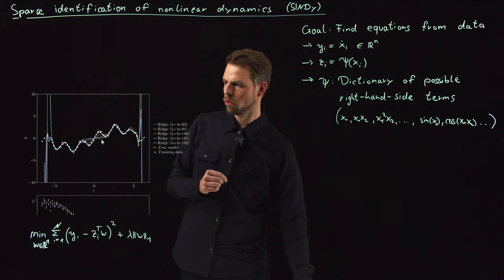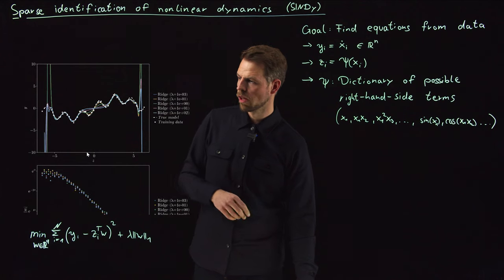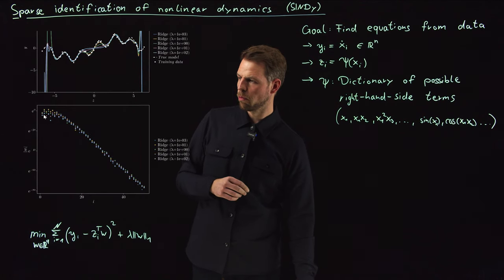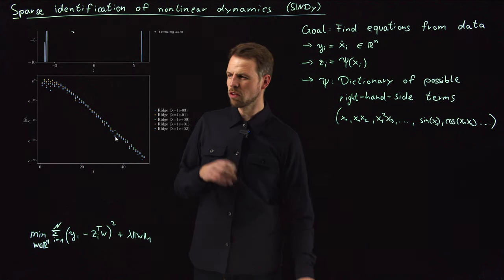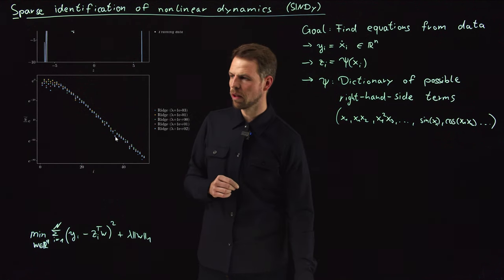If you overdo it with the lambda, you see that you get underfitting, basically. So nothing new here, same problem, the weights are all nonzero. This is why we introduced the lasso and the L1 regularization.